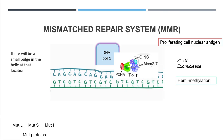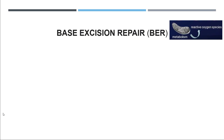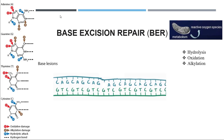Next is the base excision repair system. In this repair system, the problems we face are hydrolysis, oxidation, and alkylation. These processes attack the nitrogenous bases present within the DNA. As you can see in the picture, the red circles or arrows show oxidation, H shows hydrolysis, and A shows alkylation. If one of these nitrogenous bases gets attacked, we will have a base lesion — for example, cytosine attacked at this position.